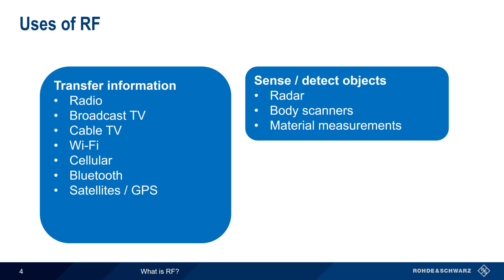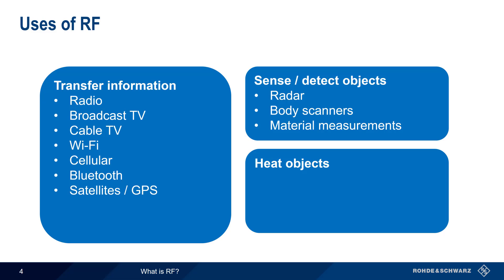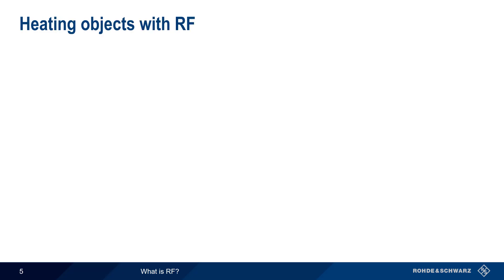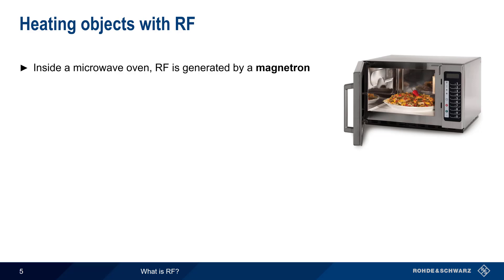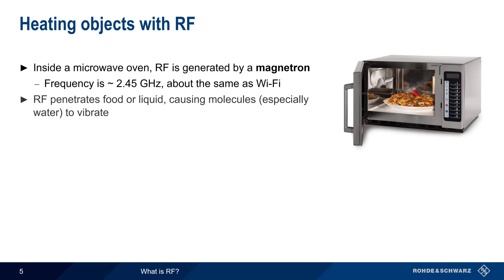The third main category of RF applications involves heating objects. This includes both microwave ovens, as well as industrial and medical applications. Since almost everyone is familiar with using RF to heat objects, we'll start there. Microwave ovens use something called a magnetron to create RF at a frequency of about 2.5 GHz. This is, incidentally, in the same frequency range commonly used by Wi-Fi and Bluetooth. This RF then penetrates foods or liquids and causes the molecules, more specifically water, to vibrate, and this vibration creates heat.